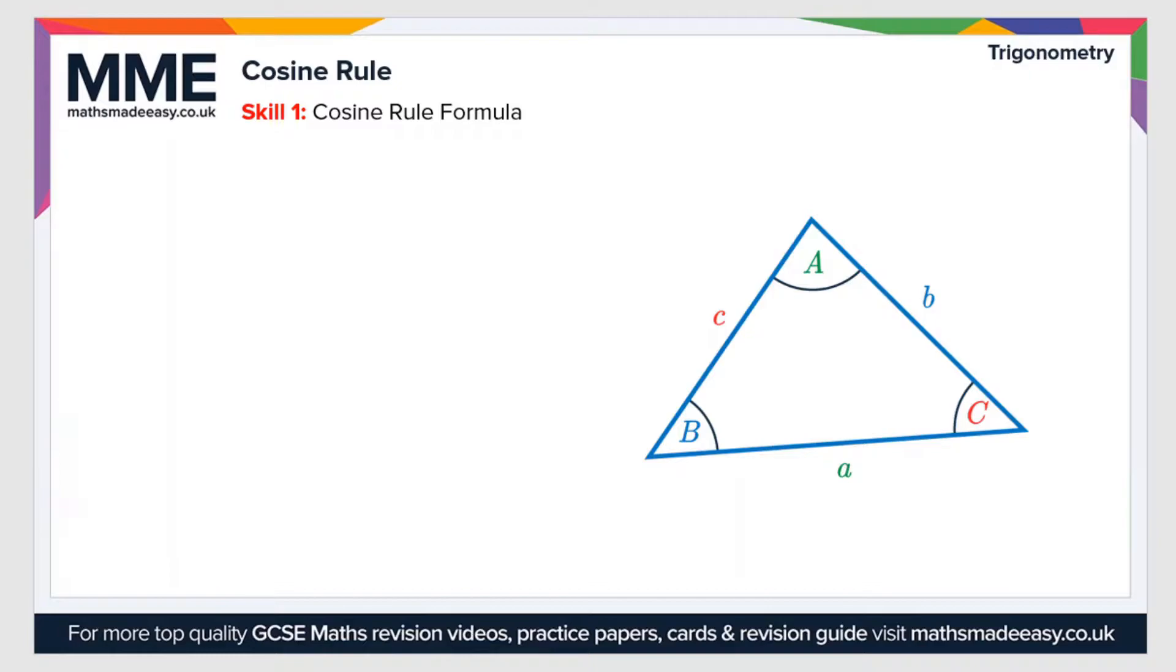So the formula is a squared equals b squared plus c squared minus 2bc cos a. This is the cosine rule because it features this cos a part.